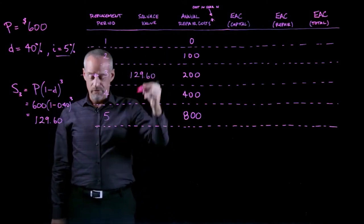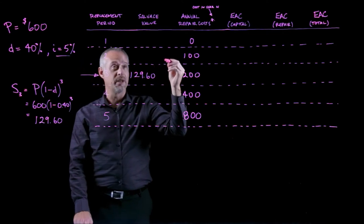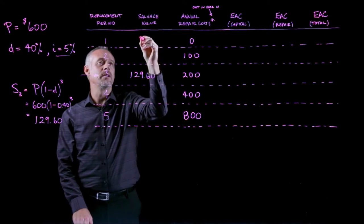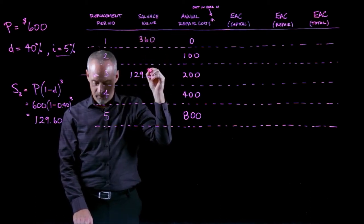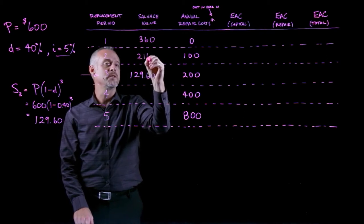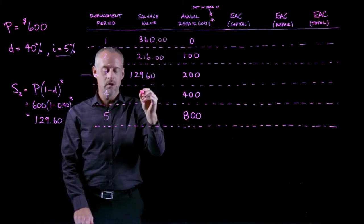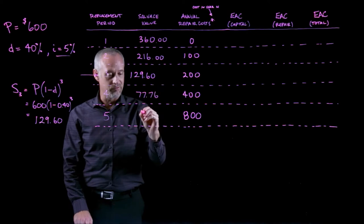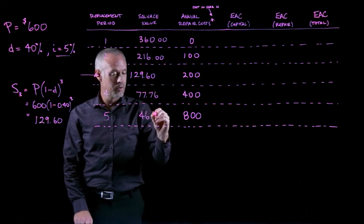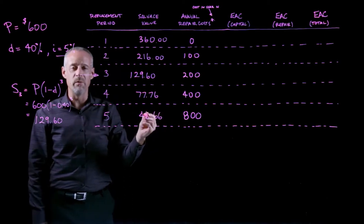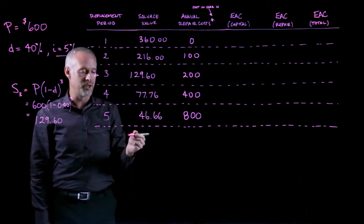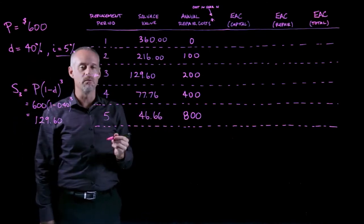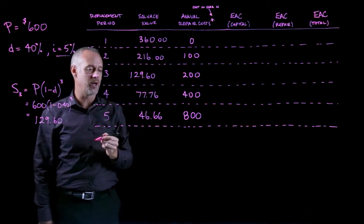Doing that calculation for all the years: if we own the lawnmower for one year and sell it, the salvage value is $360. For two years, it's $216. For four years, it's $77.76. And for five years, it's $46.66. You can imagine seeing a five-year-old lawnmower at a garage sale for about $50, so this 40% depreciation rate sounds like a reasonable assumption for estimating salvage value.